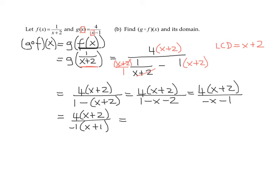And we never leave negatives in the denominator. So 4 divided by negative 1 is negative 4 times the quantity x plus 2 over the quantity x plus 1. And that is g composed with f of x. We have found our simplified form of the composition of g composed with f.